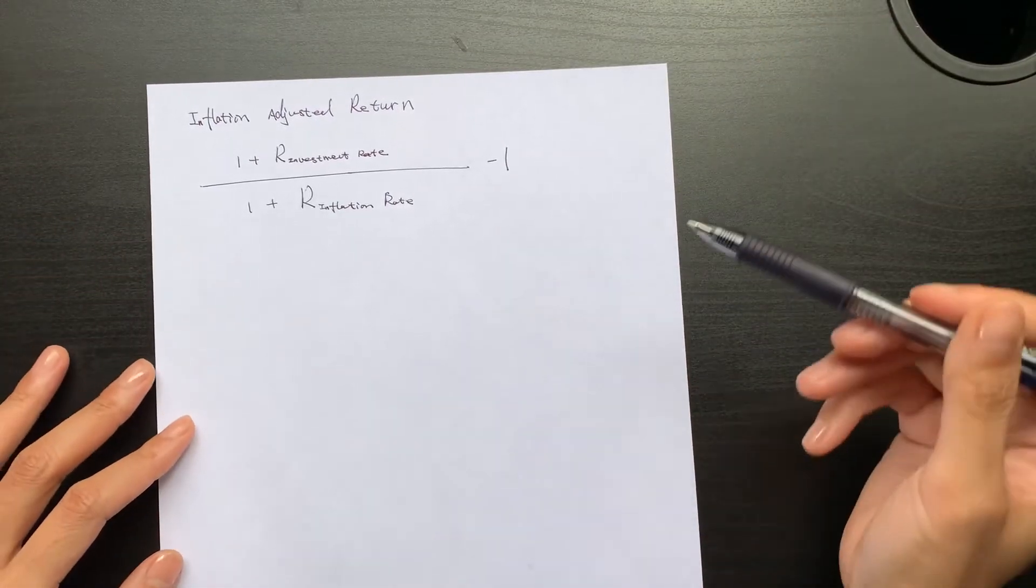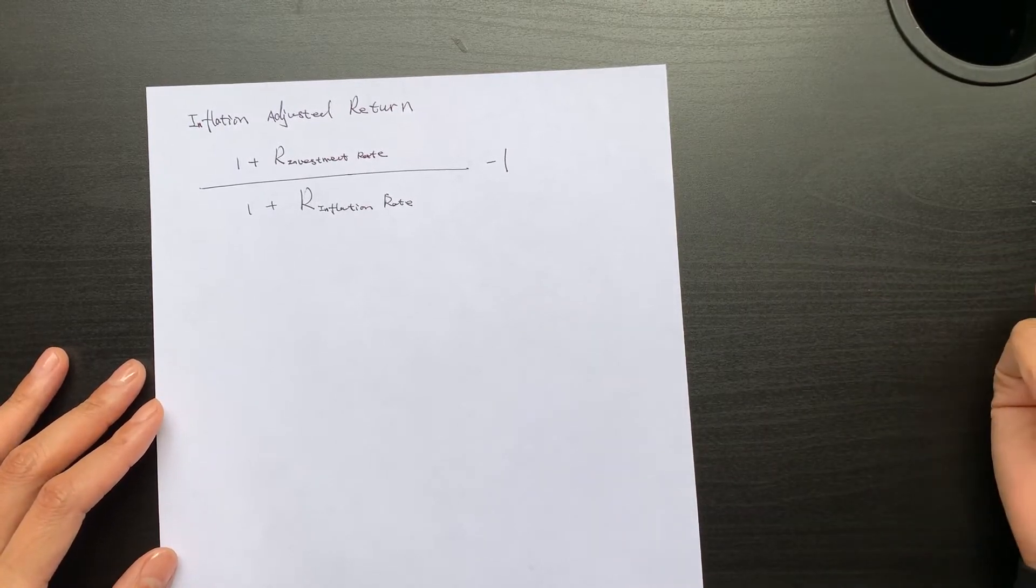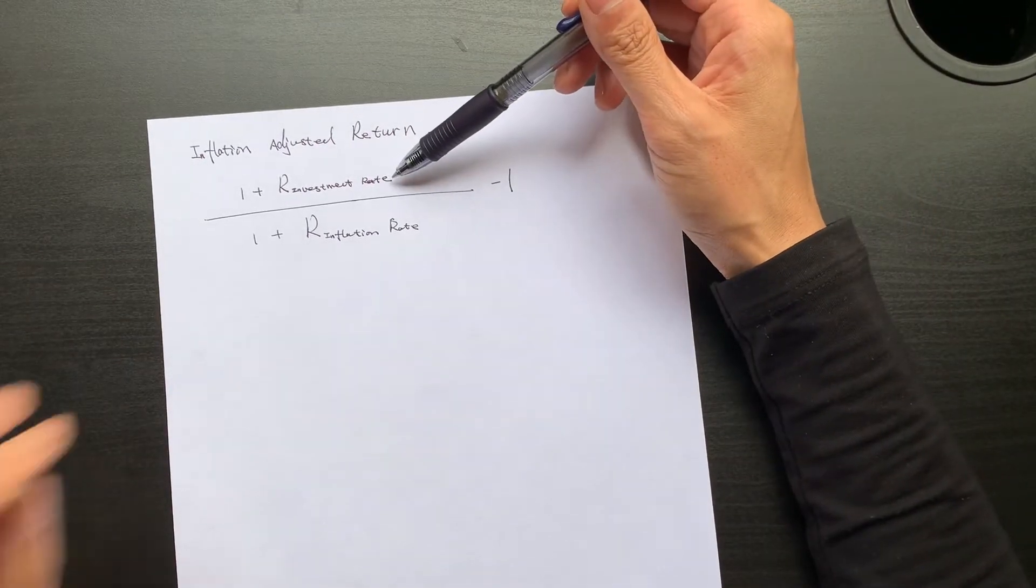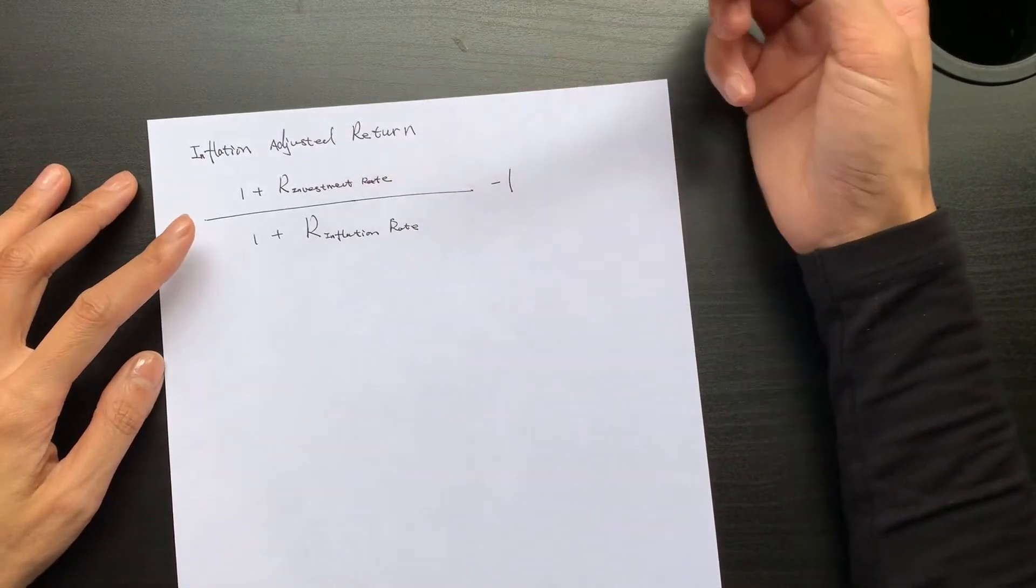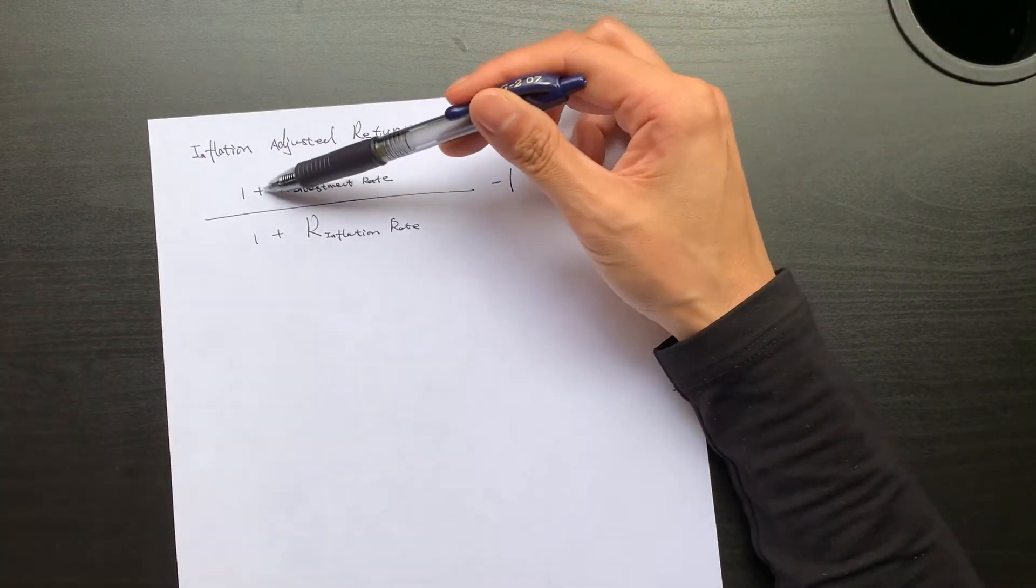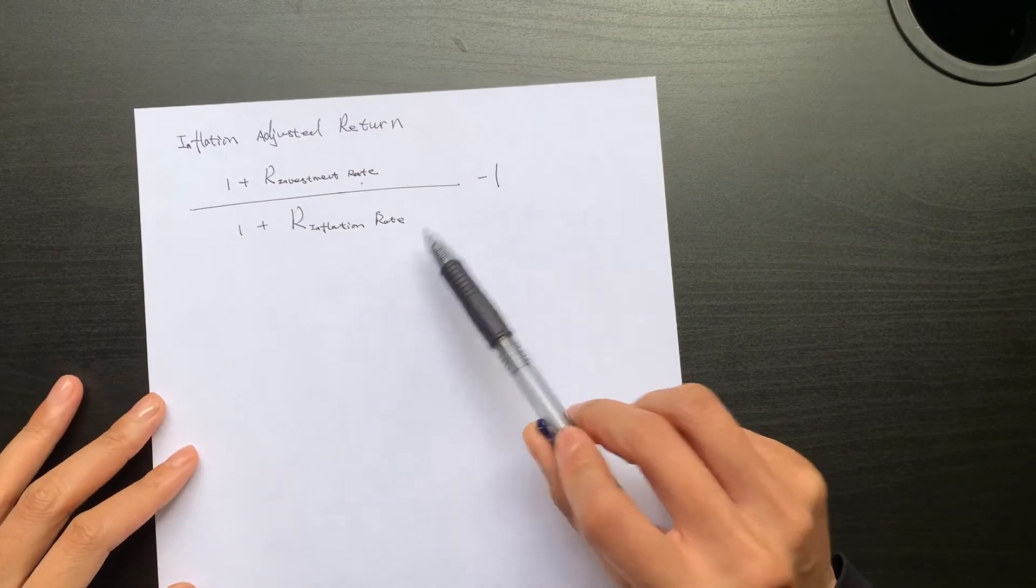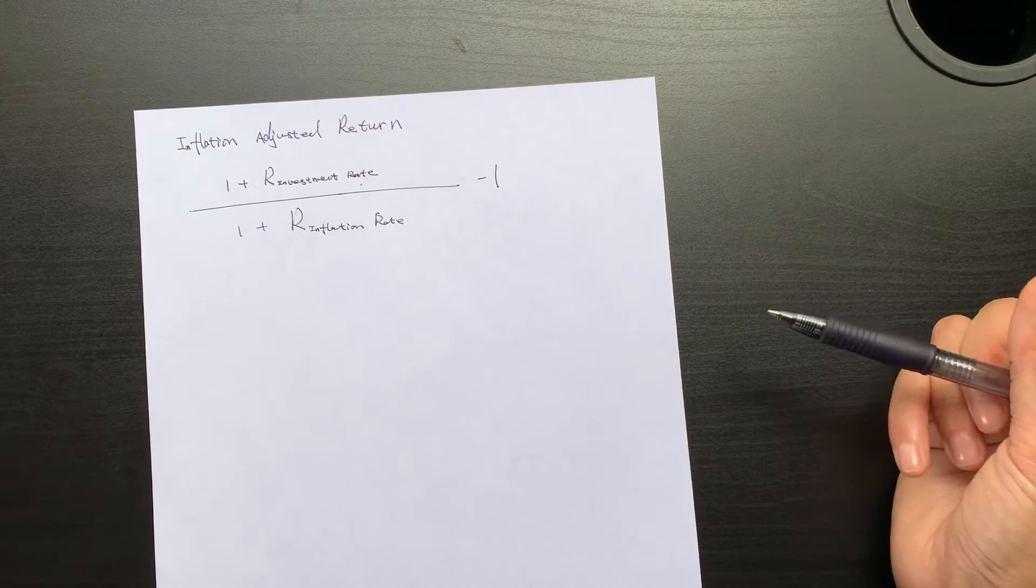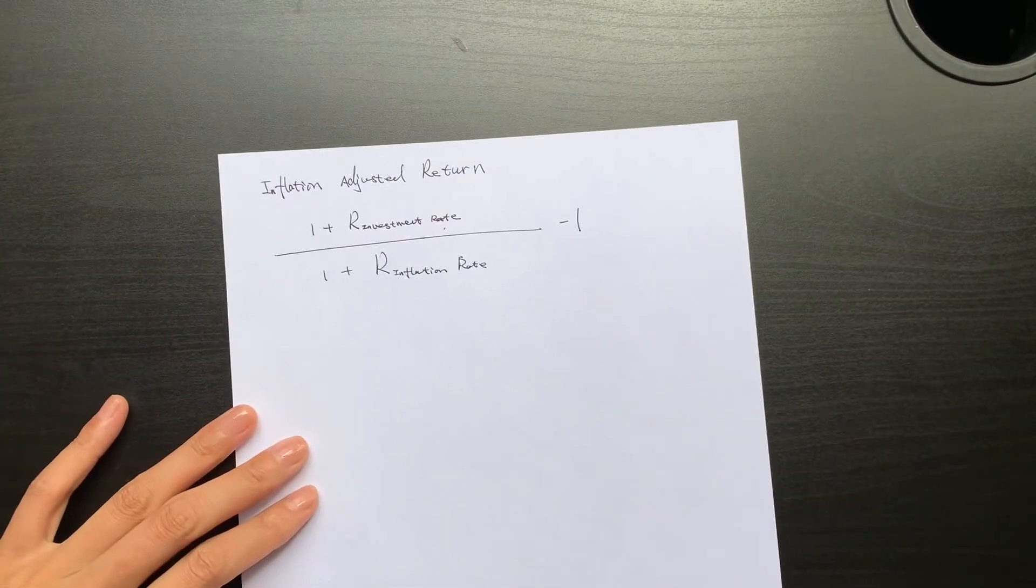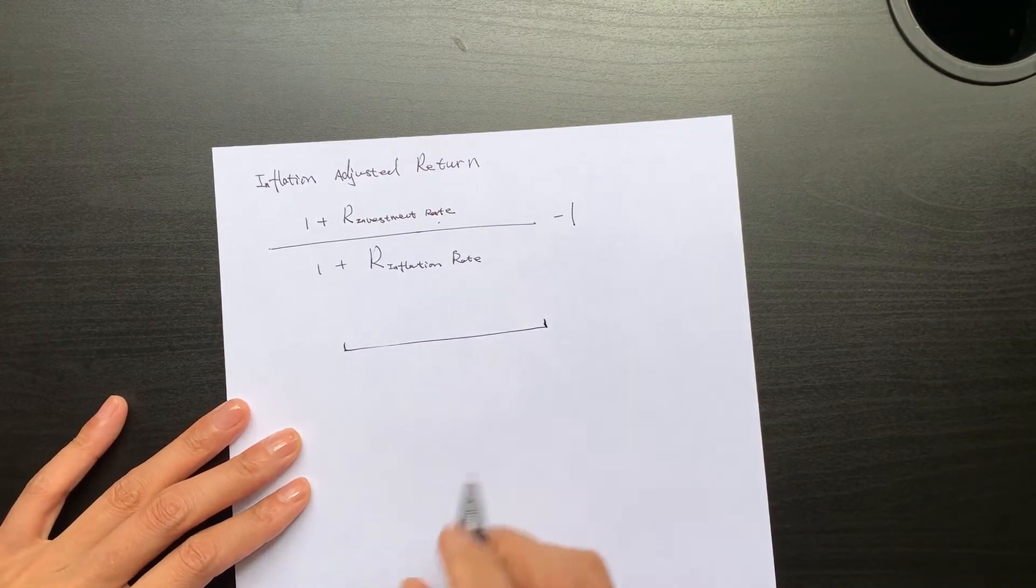Okay, today I want to talk about the inflation-adjusted return. Why the inflation-adjusted return? Let's say your investment return is: one plus investment return, then divide by one plus the inflation rate, then minus one. So why is this?